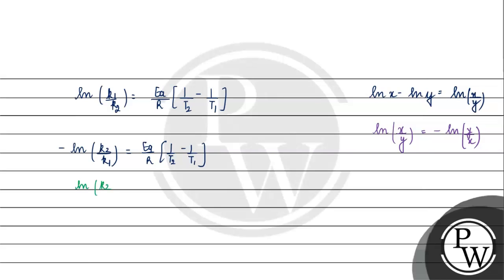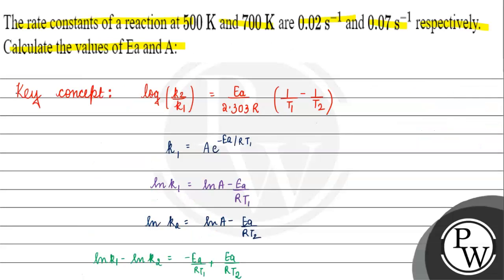And if we want to write ln as log with base 10, we multiply by 2.303, which goes to the denominator. So we have this equation: log K2 by K1 equals Ea by 2.303R, 1 upon T1 minus 1 upon T2. This is the same equation we started with.